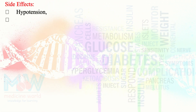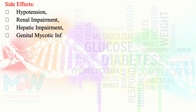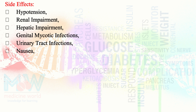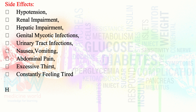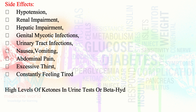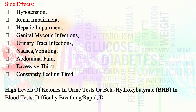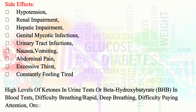Side effects include: hypotension, renal impairment, hepatic impairment, genital mycotic infections, urinary tract infections, nausea, vomiting, abdominal pain, excessive thirst, constantly feeling tired, high levels of ketones in urine tests or beta-hydroxybutyrate in blood tests, difficulty breathing, rapid and deep breathing, difficulty paying attention or confusion, and rapid weight loss.